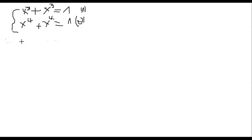Hello and welcome to this new video in which we are going to show you how to solve this Olympiad problem: a system of equations with two equations. The first equation is x cubed plus y cubed equals one, and the second equation is x to the power four plus y to the power four equals one. We need to solve both equations simultaneously.